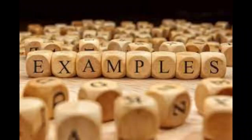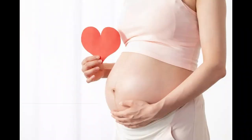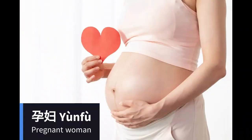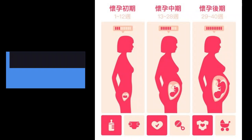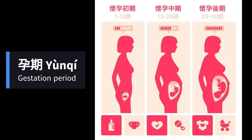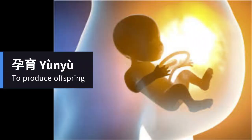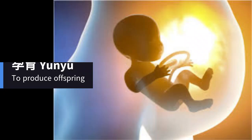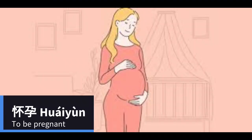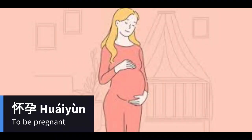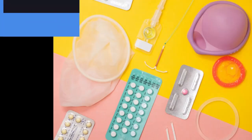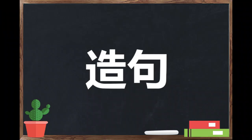Now let's see some examples. 孕妇 — pregnant woman. 孕期 — gestation period. 孕育 — to be pregnant or to produce offspring. 怀孕 — to be pregnant. 避孕 — contraception.